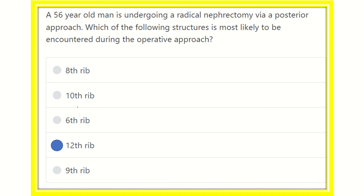So our answer is the 12th rib. The kidney is located at the level of the 12th rib, and during the radical nephrectomy procedure, this 12th rib will be encountered in the posterior operative approach. Thank you all.